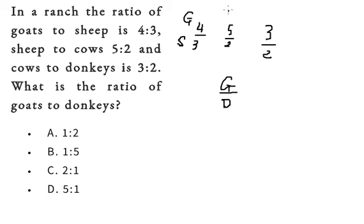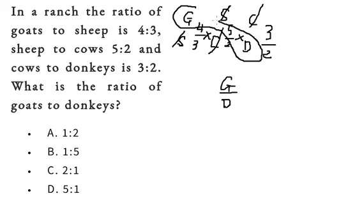The sheep to cows should be here, and the cows to donkeys should be like this. If we multiply these together, the sheep will cancel out, cows will cancel out. So we just have G over D.